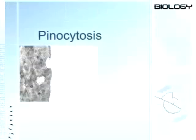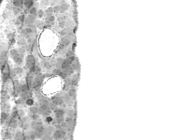Fluids that the cell wants to take in enter by a process called pinocytosis. In this type of endocytosis, the cell membrane sinks in. The material sinks inward and the membrane pinches off. The cell uses energy for this movement.